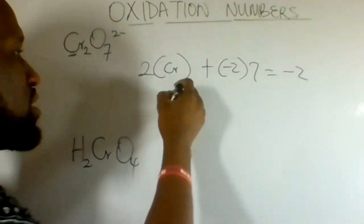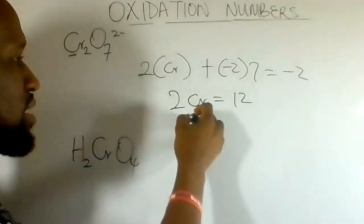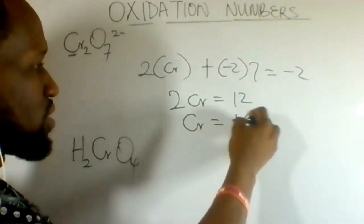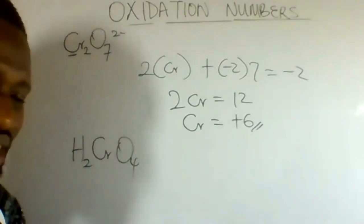If we sum this out, 2Cr equals 12. Therefore Cr is plus 6. Chromium in dichromic ions is plus 6.